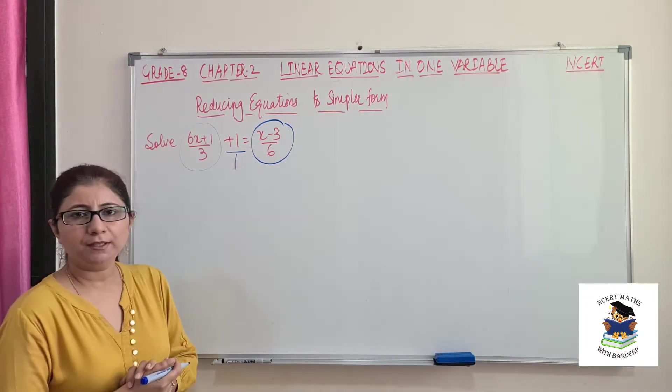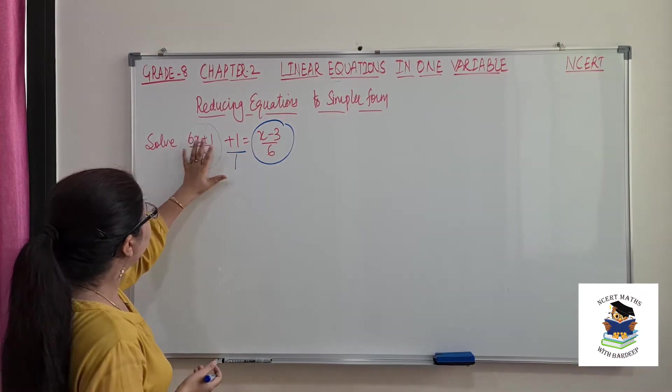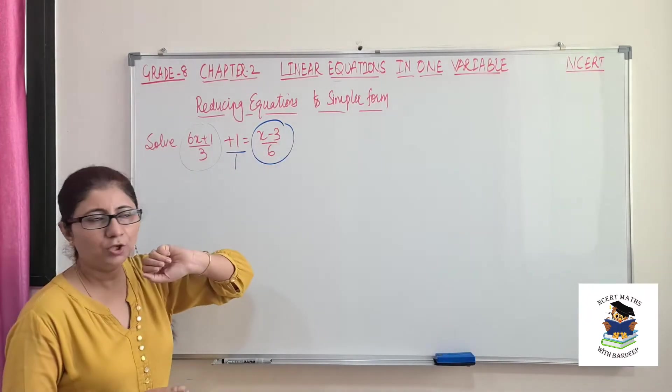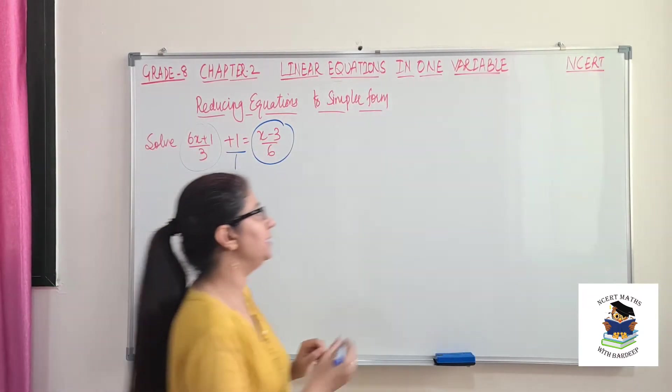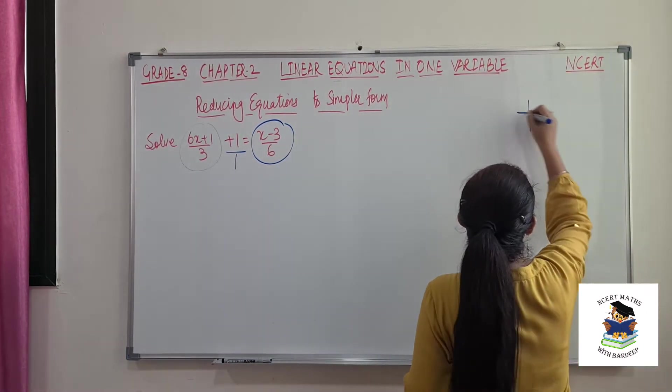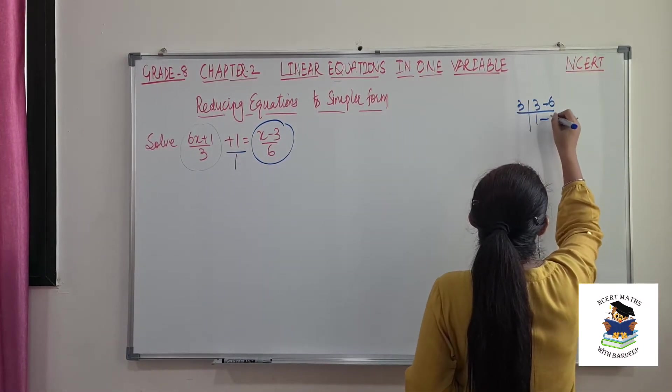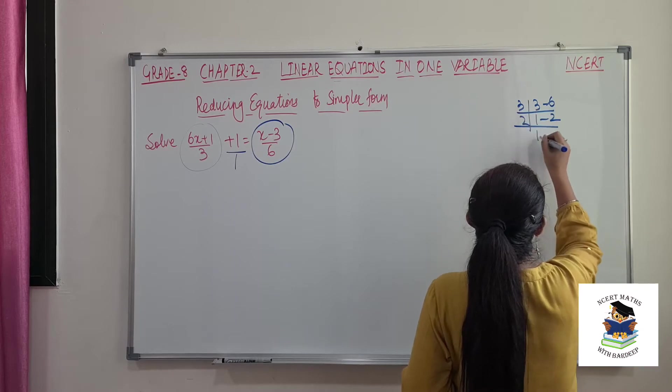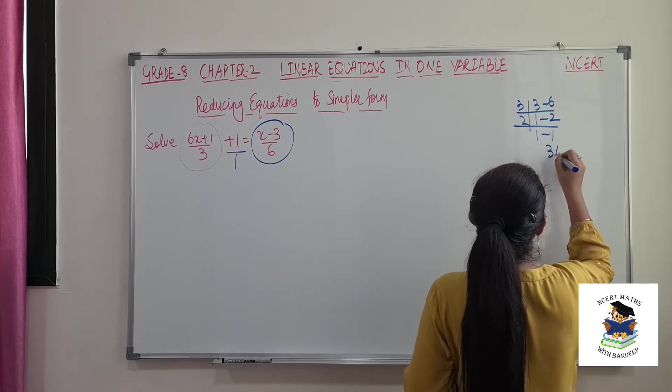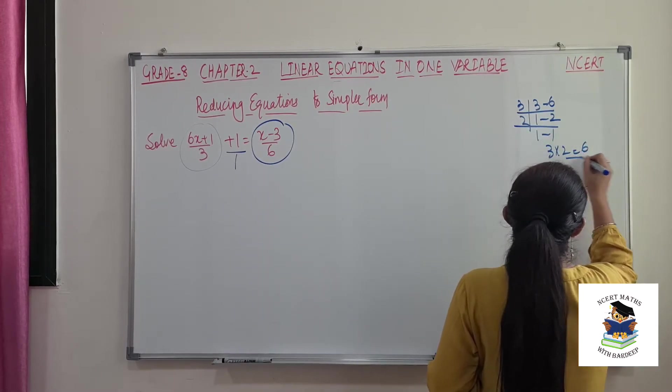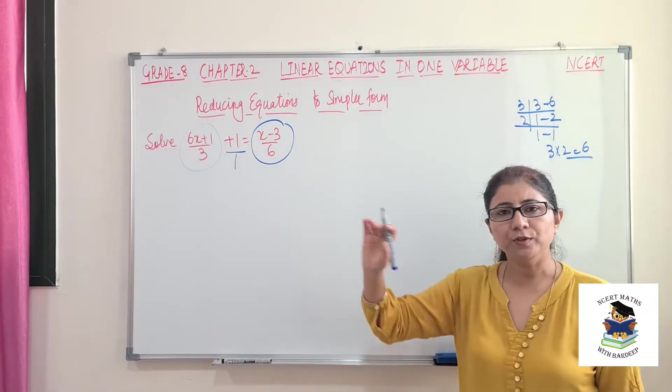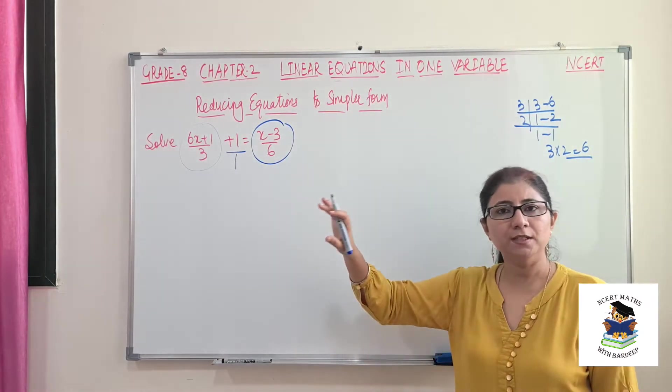So for this, I will write denominator as 1, and we will find the LCM of denominators. So 3 and 6, LCM will be 6. So 1 and 2, then it is 1, 1. So 3 into 2, 6 is the LCM. So we will make the denominators 6.